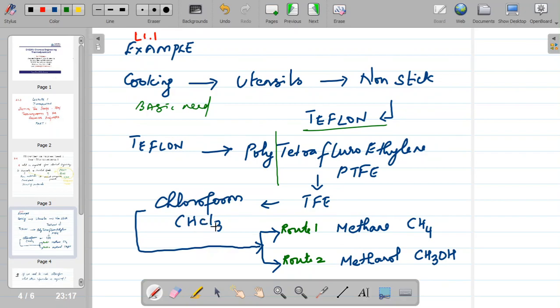And this chloroform can be made by two different routes. One can follow the methane route. You can start with methane, which can be chlorinated to form methyl chloride which on subsequent chlorination will give you dichloromethane and trichloromethane which is chloroform. And if you chlorinate this, this will give CCl4 or carbon tetrachloride.